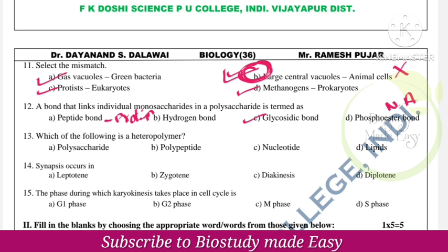Which of the following is a heteropolymer? The right option is option B — polypeptide. Polypeptides and proteins are always heteropolymers, while others are homopolymers.